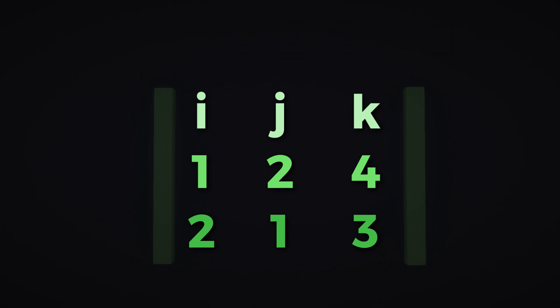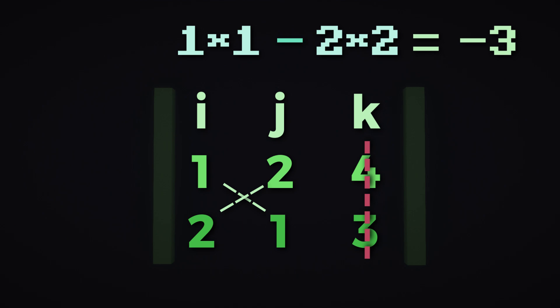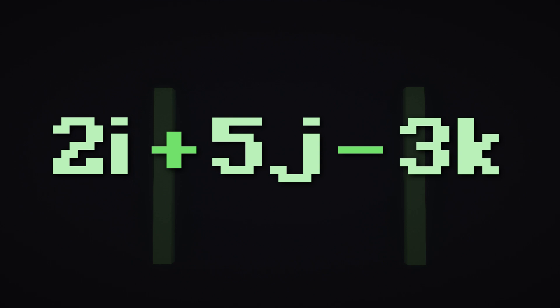Now for K, do the exact same thing. Ignore the K column and do the same X motion: 1 times 1 minus 2 times 2, which equals negative 3. Now K is positive, so we keep the negative 3 and have negative 3K. Our final vector is 2I plus 5J minus 3K.